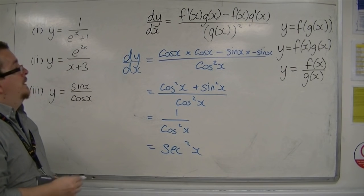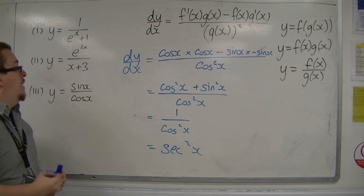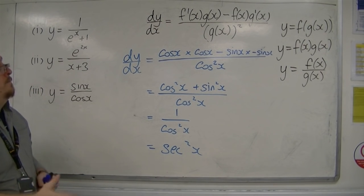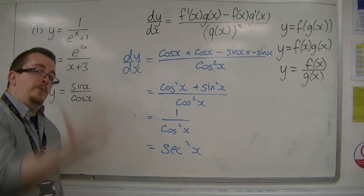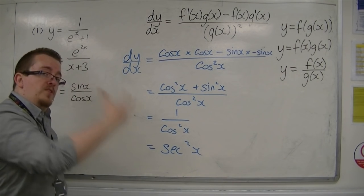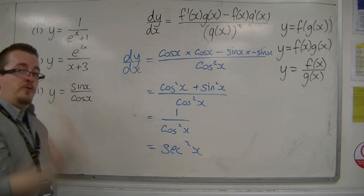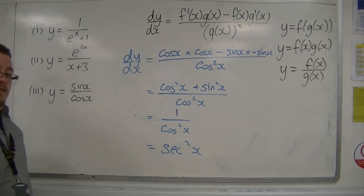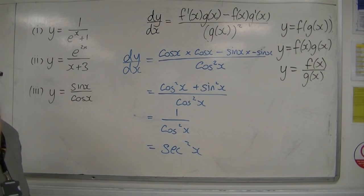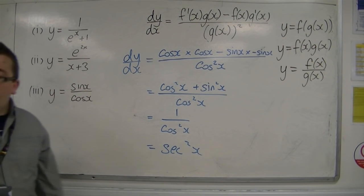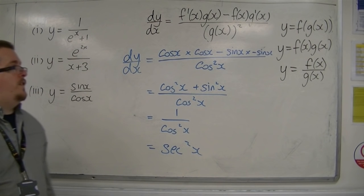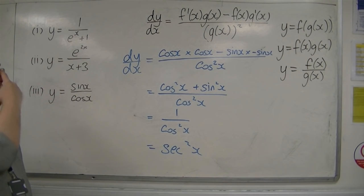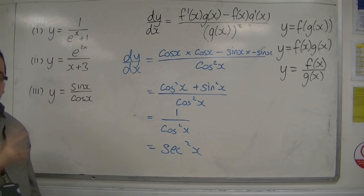And that's how we can use the quotient rule. As I said, I remember it as: the bottom times the derivative of the top, take away the top times the derivative of the bottom, over the bottom squared. The more you practice it the better, but it is in the formula booklet if you ever forget it.